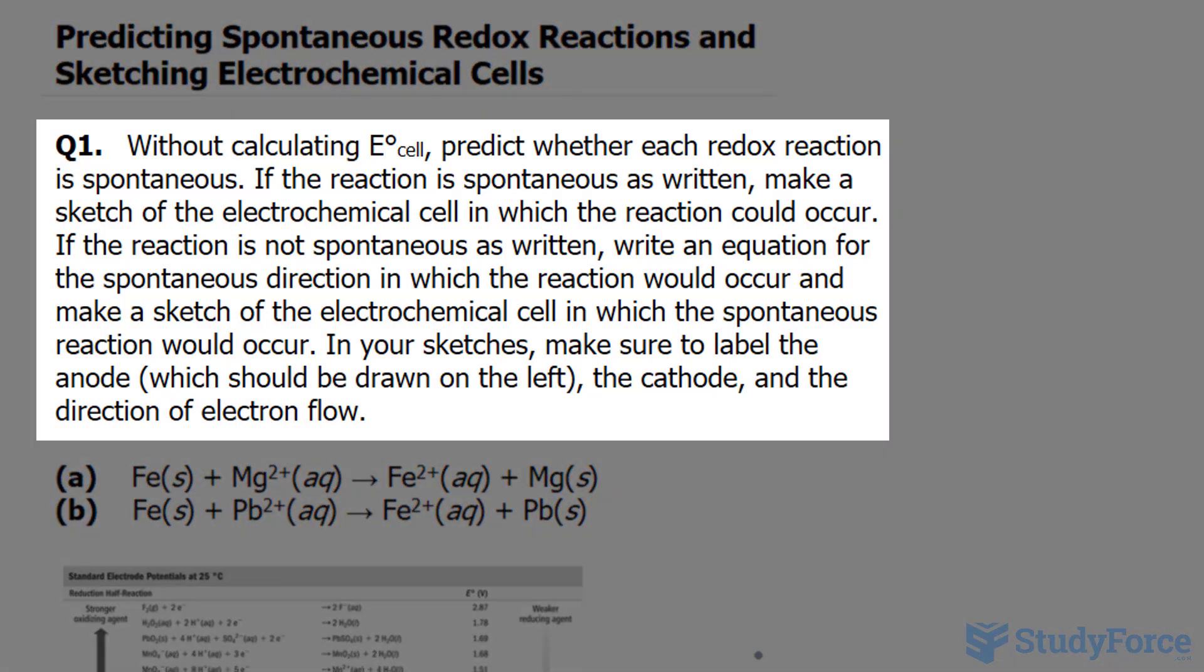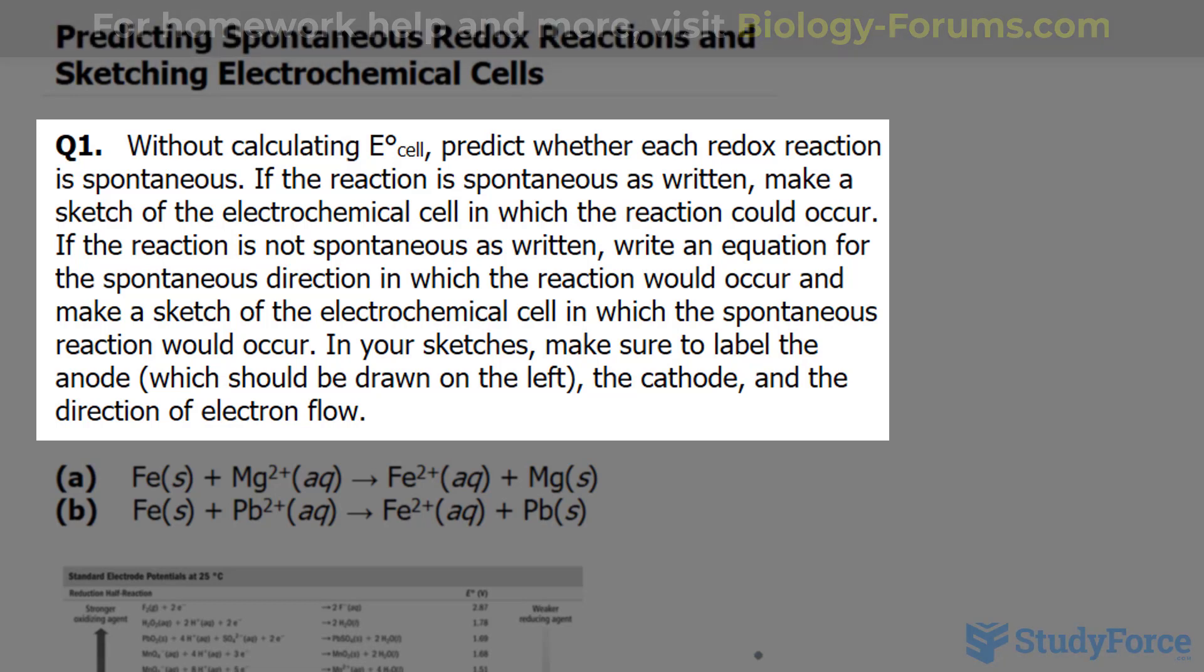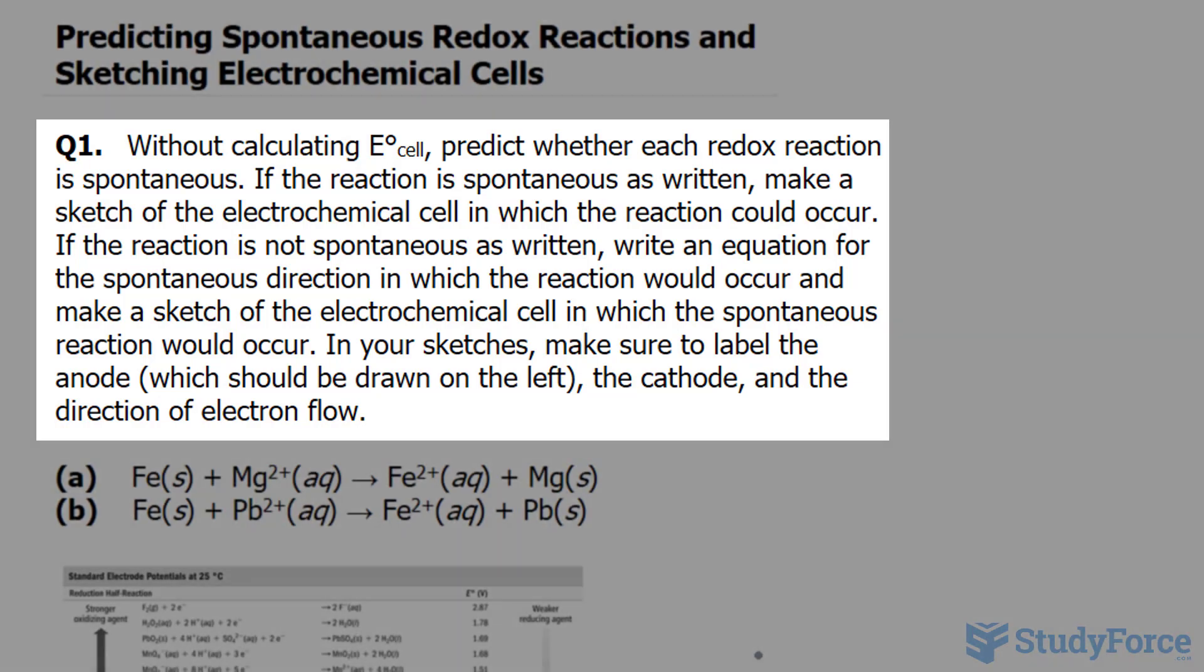The question reads, without calculating the standard cell potential, predict whether each redox reaction is spontaneous. If the reaction is spontaneous as written, make a sketch of the electrochemical cell in which the reaction could occur. If the reaction is not spontaneous as written, write an equation for the spontaneous direction in which the reaction would occur and make a sketch for the electrochemical cell in which a spontaneous reaction would occur.